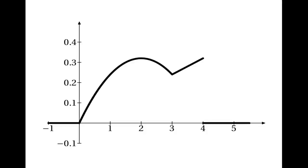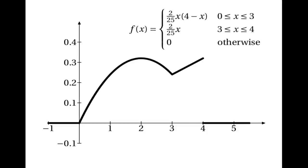Now we can see there are two candidates for the mode — it could be at x = 2, or it could be at x = 4. We'll need to do some calculation to find out where the probability density is actually higher. We work out f(2) = (2/25) · 2 · (4 − 2) = 8/25.